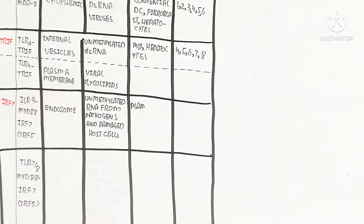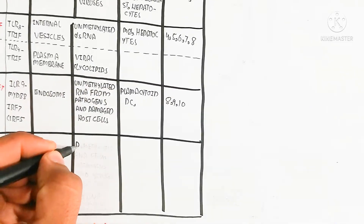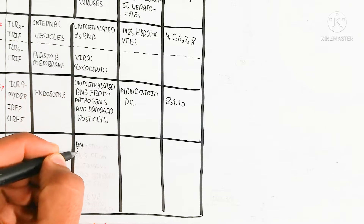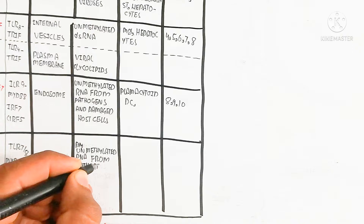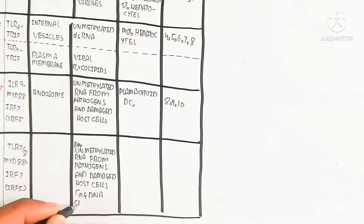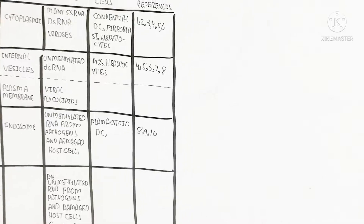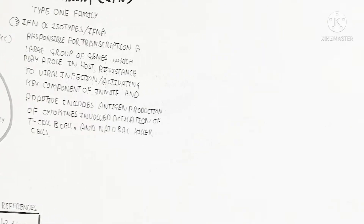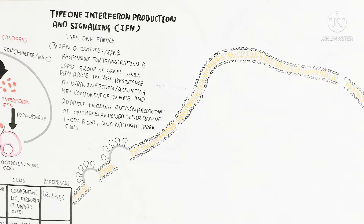The IRF7 pathway uses toll-like receptor 9, MYD88 protein, IRF7, and IRF5. Localization is the endosome, and inducers include unmethylated RNA from pathogens and damaged host cells, as well as CpG DNA and chromatin immunocomplex formation. Toll-like receptors 7 and 8 with MYD88, IRF7, and IRF5 also detect unmethylated RNA from pathogens.